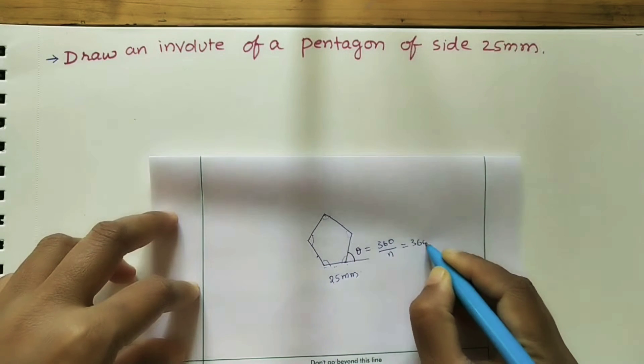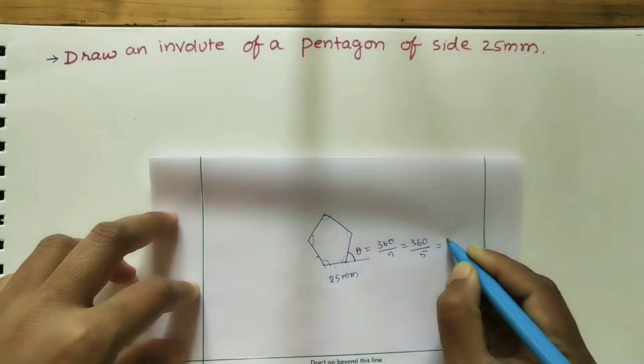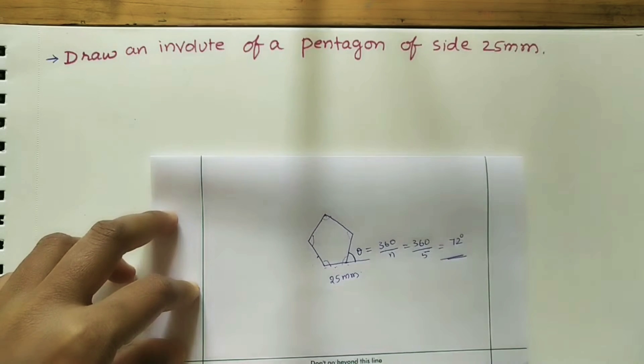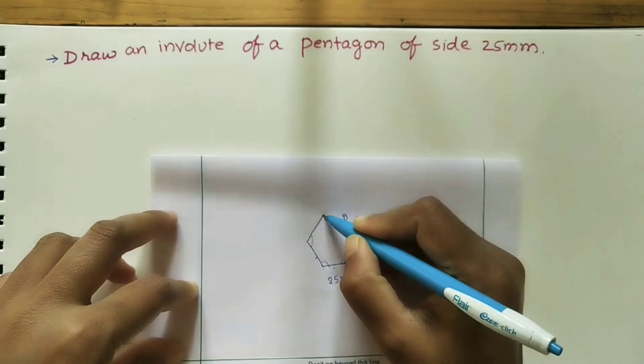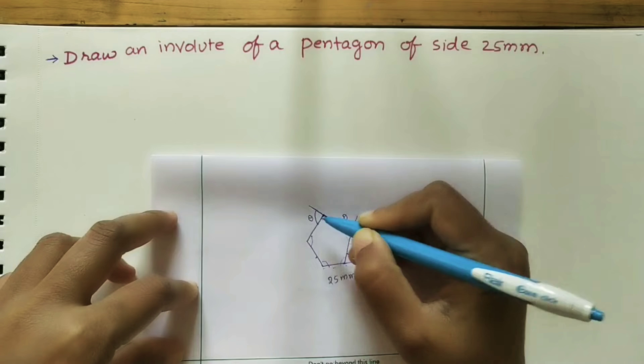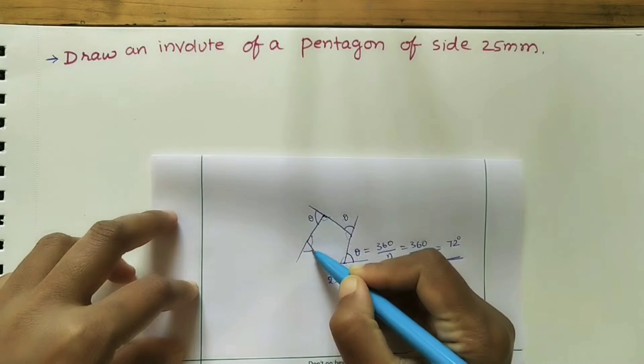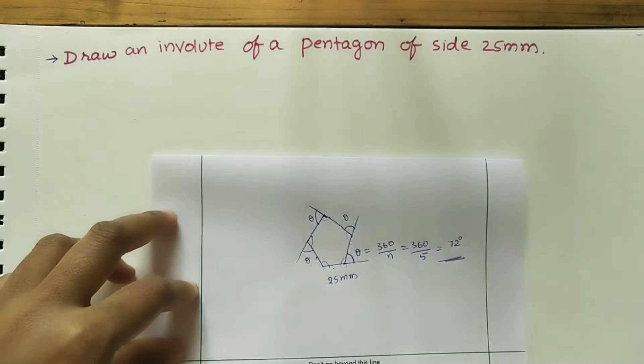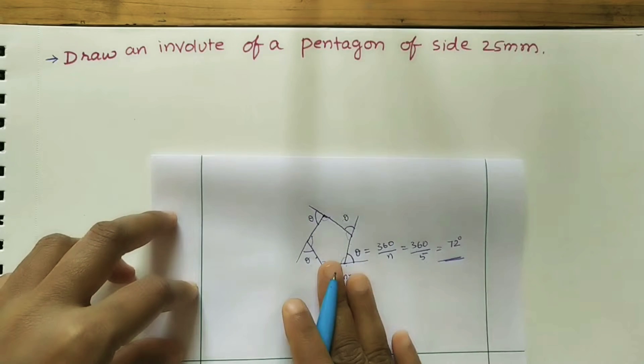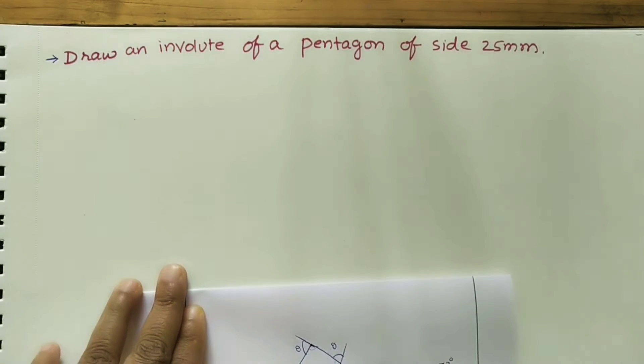At all outer angles, the angle is the same, it is 72 degrees. Theta equals 72 here, also 72 here, also 72 here. So all outer angles have the same value. First we will draw this pentagon on the sheet by using the instruments.